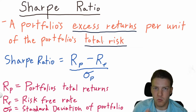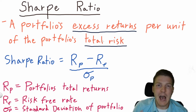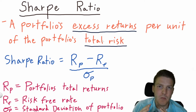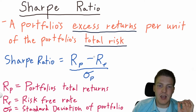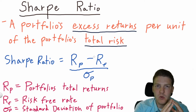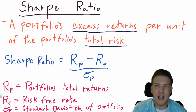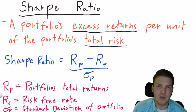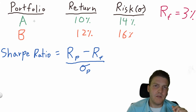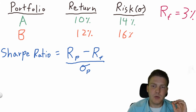In the denominator we see the standard deviation of the portfolio, which is the portfolio's total risk — the variation in how the portfolio's price moves. So we're seeing how much excess return we get for how much risk we take. Obviously a higher value is better; we want higher return and lower risk in any portfolio.